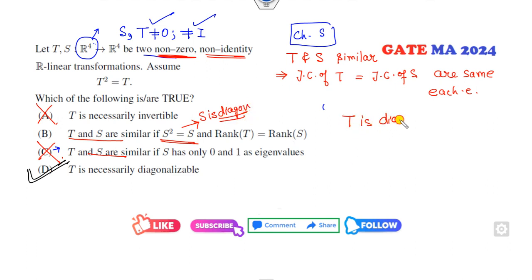We all know if T is diagonalizable, can you find the rank of T? Yes, you can easily find the rank of T is the number of non-zero eigenvalues. Remember, this result is only applicable when the matrix is diagonalizable.